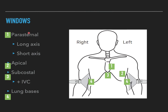The first view available is the parasternal view, which has a long axis and a short axis. We place the probe in the second, third, or fourth intercostal space on the left side of the sternum. The second view is the apical view, where we place the probe at around the apex. The third is the subcostal view, similar to the heart view in a FAST scan. The heart scan is incomplete if you have not assessed the IVC and the lung bases.